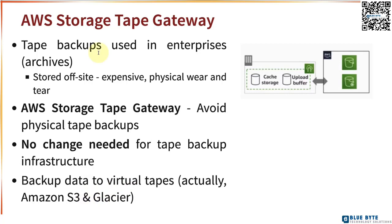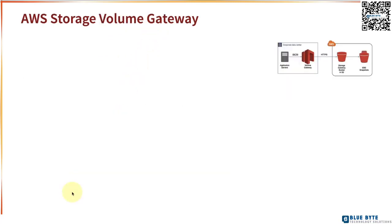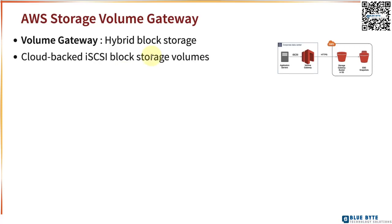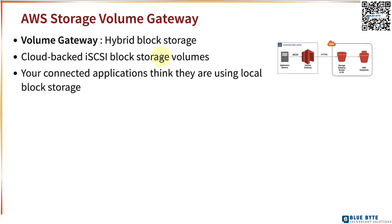So if you want to avoid physical tapes but still take tape backups using your existing tape backup infrastructure, you can use AWS Storage Tape Gateway to store your tape backups in Amazon S3 and Glacier. The next type is AWS Storage Volume Gateway — this is hybrid block storage, providing cloud-backed iSCSI block storage volumes.